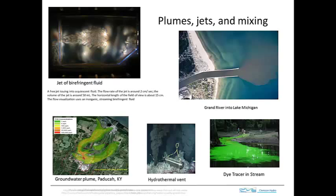Here are some more examples of advection and dispersion. In the upper left corner we see a jet of fluid being injected into an experimental cell. This is a special fluid that can be identified using an optical technique. You can see the jet is about this wide right here and it spreads out, and by the time it gets downstream it's many times wider than it starts. That's a characteristic spreading caused by dispersion.